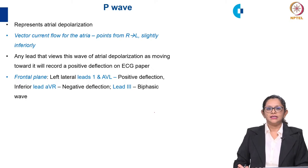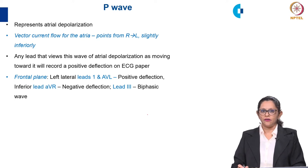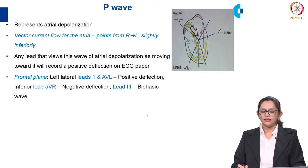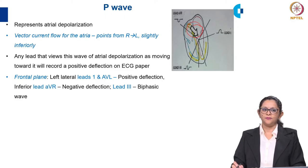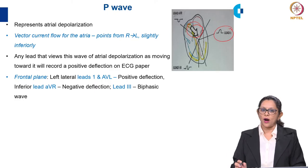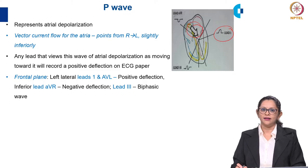As the ECG records this vector, it is represented as waveforms — the P wave, QRS complex, and T wave. For the P wave, which represents atrial depolarization, the vector current flows from the atria pointing downward from right to left, slightly inferiorly. Any lead that views this wave of depolarization as moving toward it will record a positive deflection on the ECG paper. The wave moves towards Lead I, hence it is recorded as a positive deflection. The P wave will be a positive wave on Lead I in the ECG.